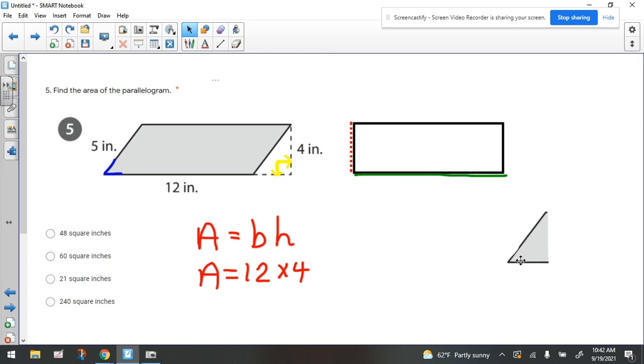So all you have left to do is to just multiply 12 times 4 and recognize which number is the product of that, and you'll be good to go with number 5.